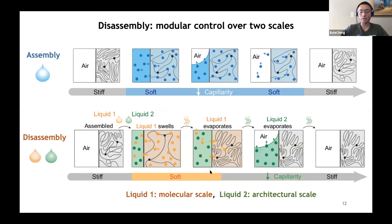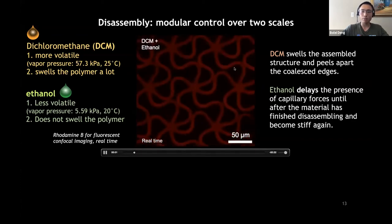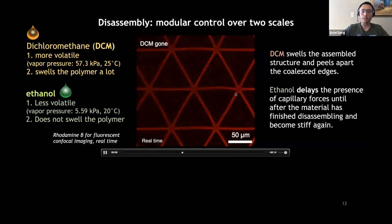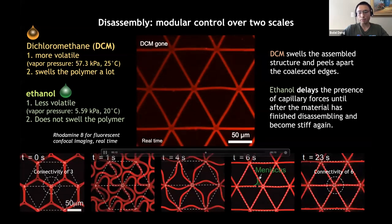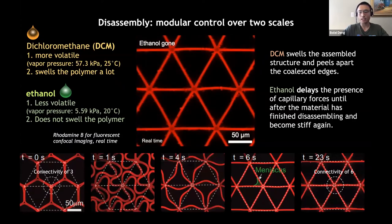What we are doing here is using each liquid to govern one scale: liquid one to swell the material at the molecular scale, and liquid two to act on the architectural scale to generate capillary force. We are decoupling those two scales using a mixture of two liquids. To demonstrate this, we use DCM as liquid one and acetone as liquid two. DCM swells the structure significantly, peeling off the assembled edges, while acetone delays the appearance of capillary force. By the time acetone evaporates, the generated capillary force can no longer deform the stiffened structure, achieving a reversed transformation from hexagonal lattice back to triangular lattice.